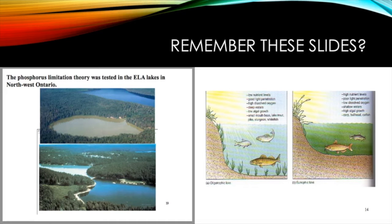On the right side, a eutrophic lake is characterized by high nutrient levels, poor light penetration, low dissolved oxygen, shallow waters, and high algae growth. The fish species present are carp, bullhead, and catfish. We actually lose fish populations such as pike, bass, and trout — fish that require high oxygen levels.